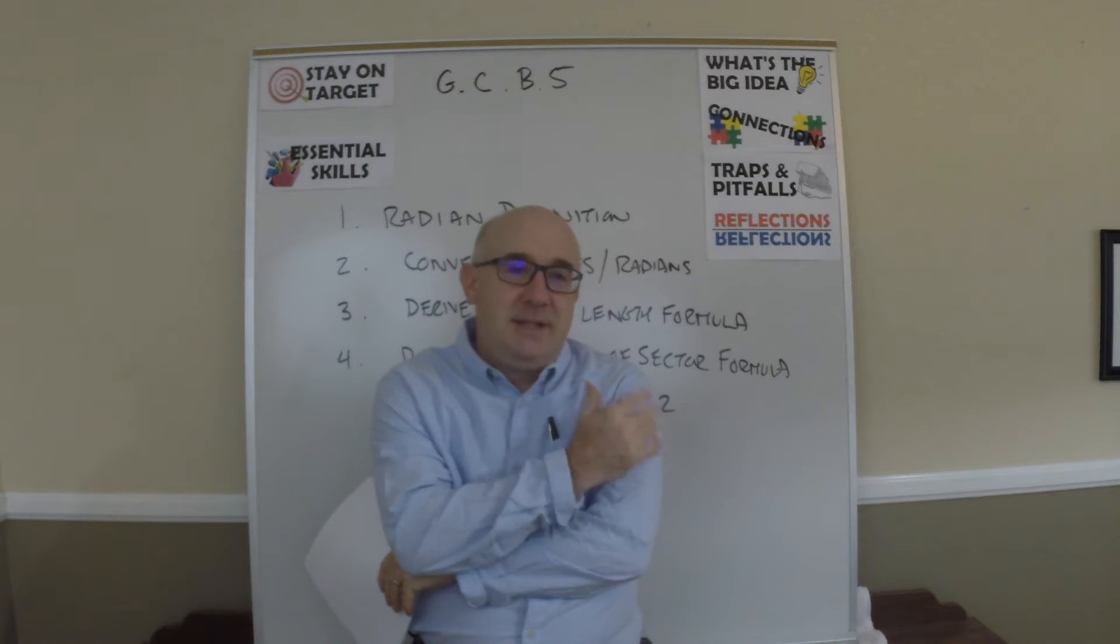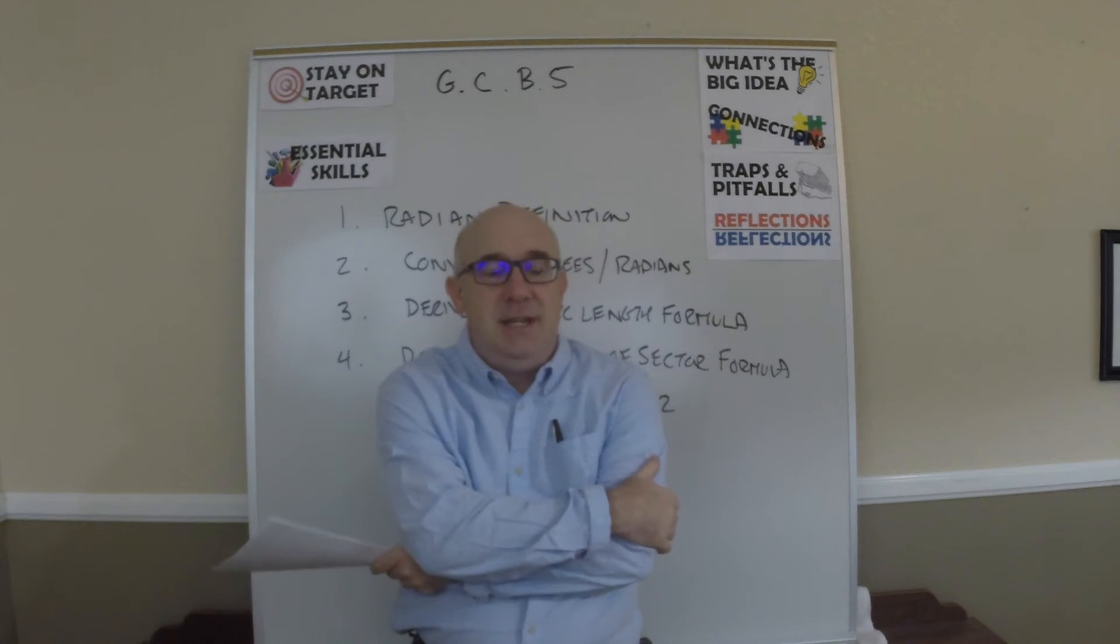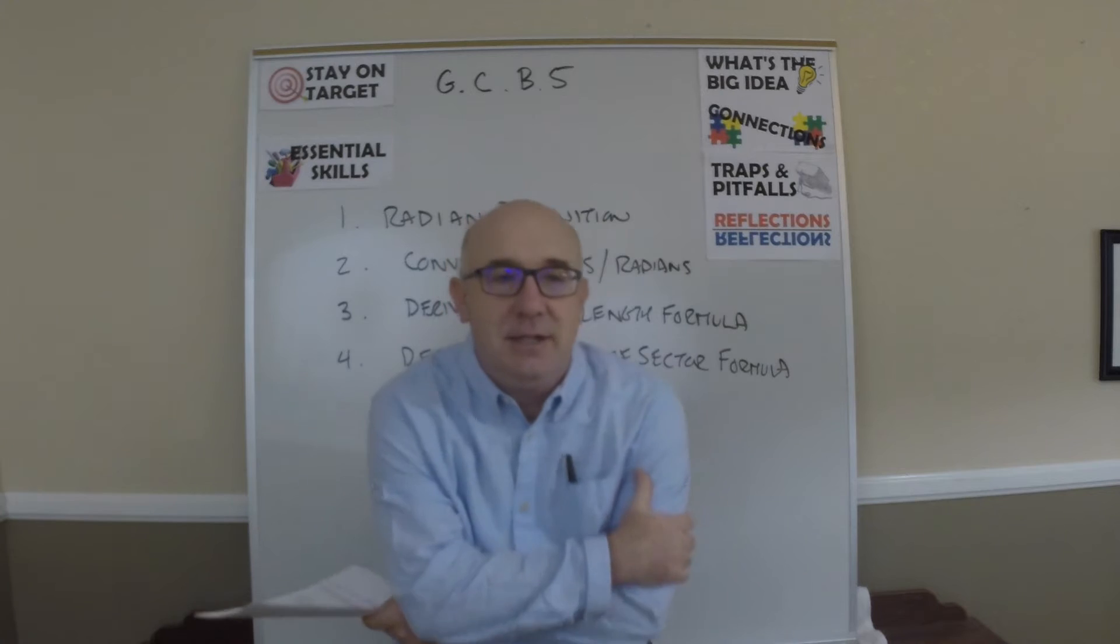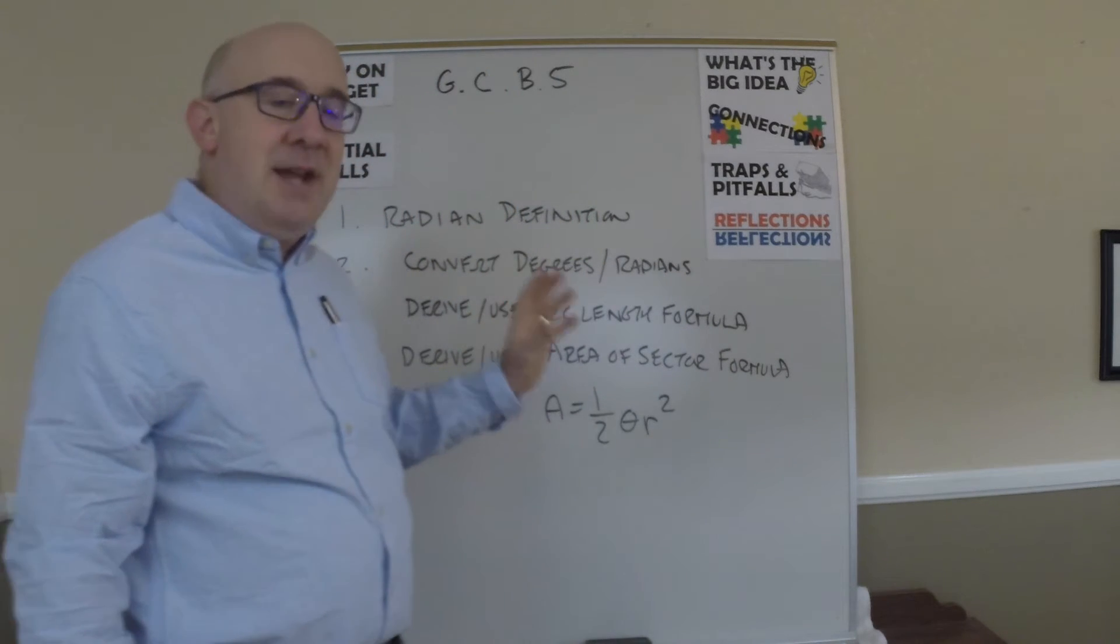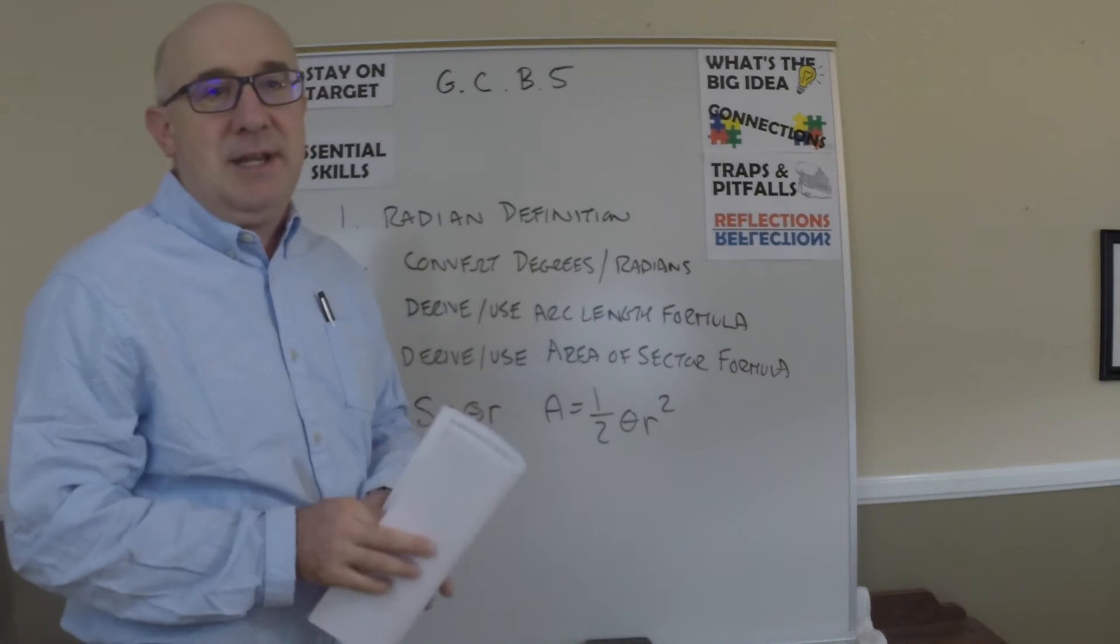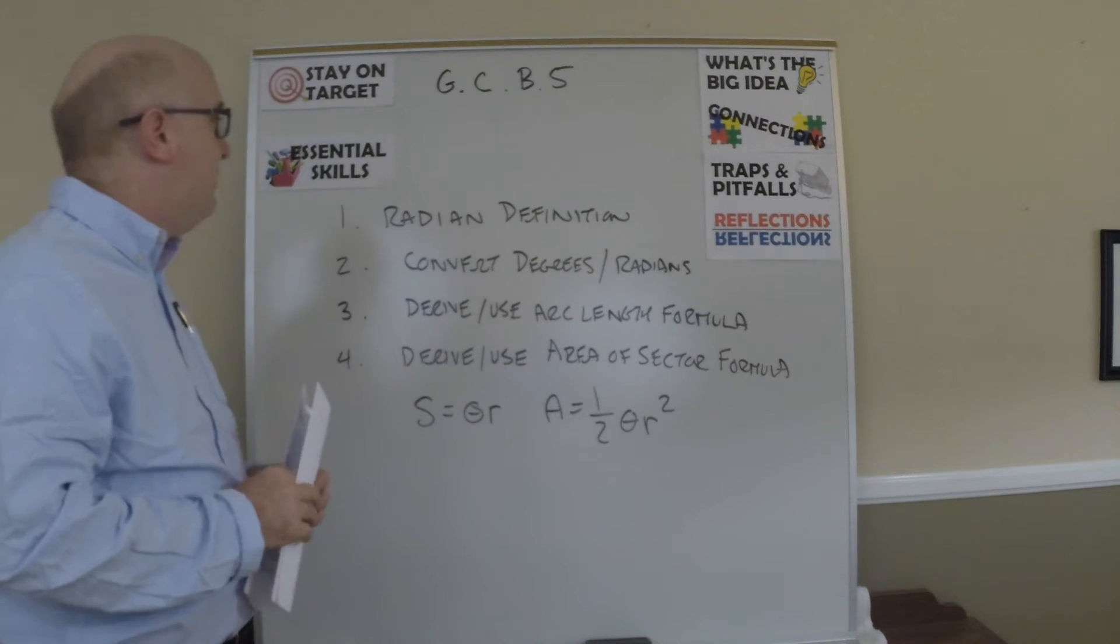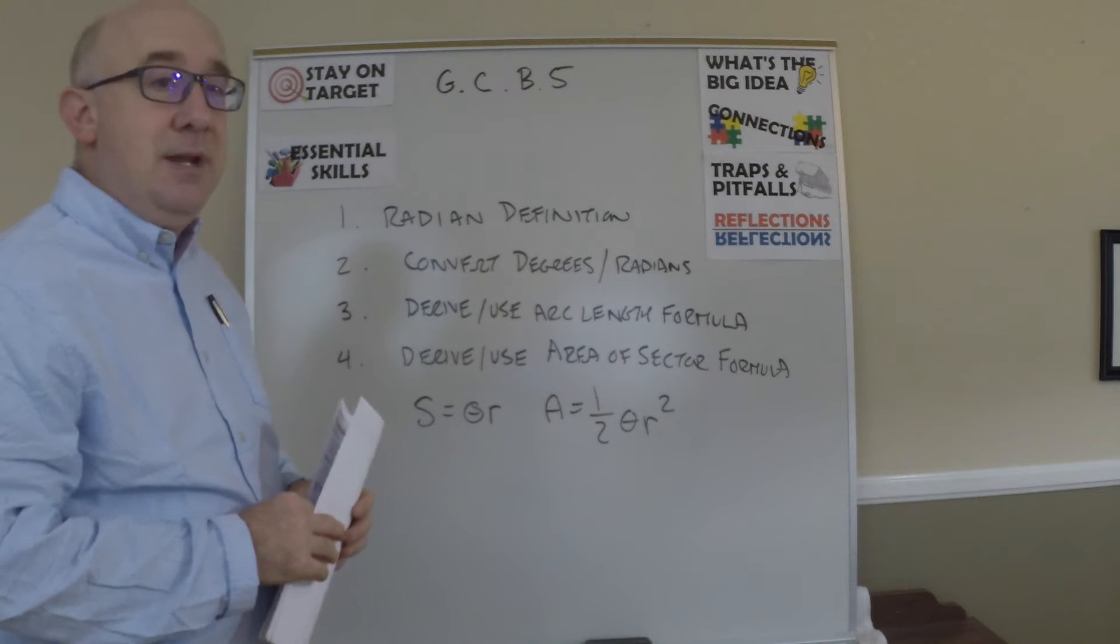All right, we're looking at the objective GCB5. This is still in the circle objectives and expands nicely into something I'm glad that we've placed into geometry now, which is radians and radian measures.